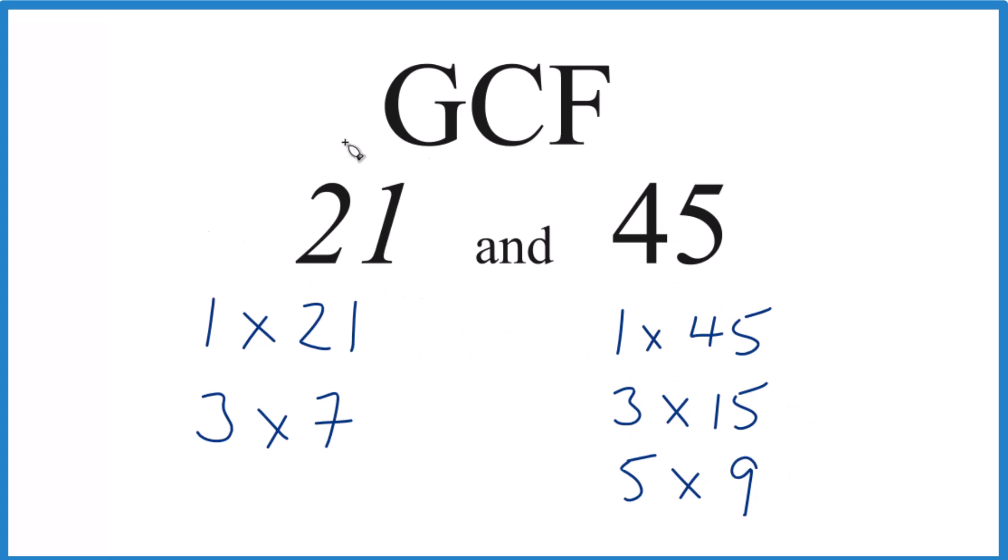So now that we have the factors for each number, we're going to find the greatest common factor. 1, that's a common factor, but 3, that's larger than 1. 3 looks like it's the greatest common factor out of all of these.